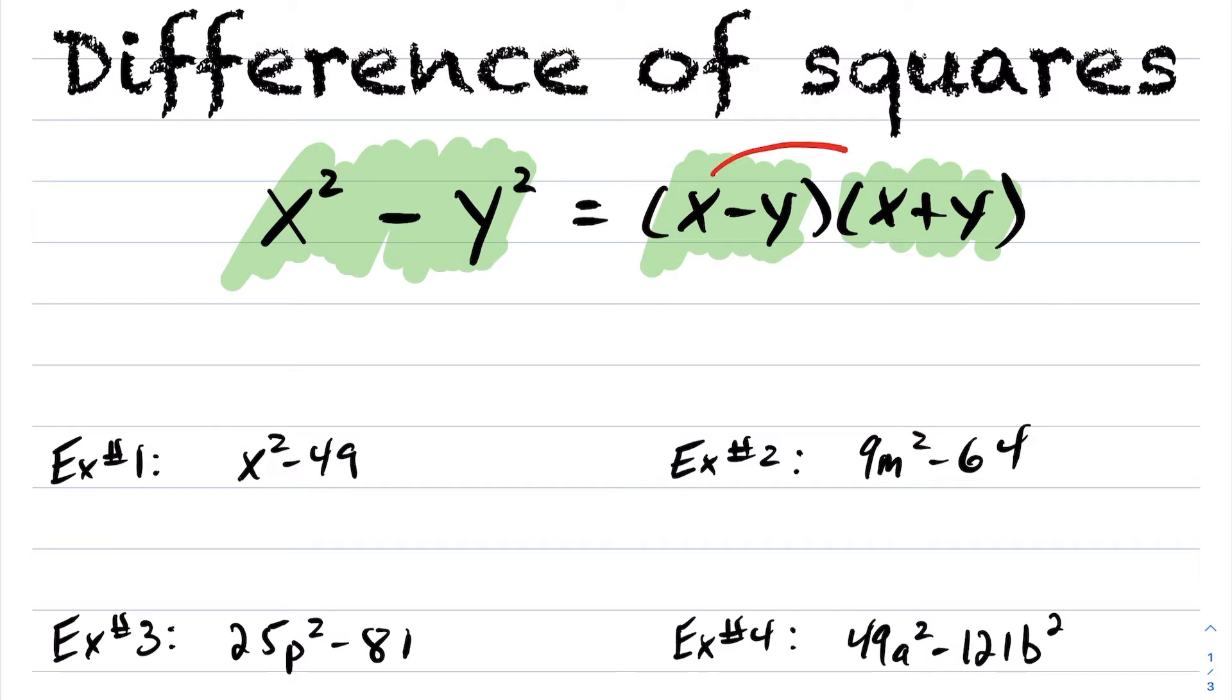To see this here, notice if I do FOIL on this and I distribute my terms here, what do we get? Well, x times x is x², x times y is positive xy, negative y times x is negative yx or negative xy, and lastly, negative y times positive y is negative y².